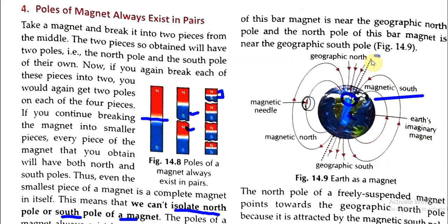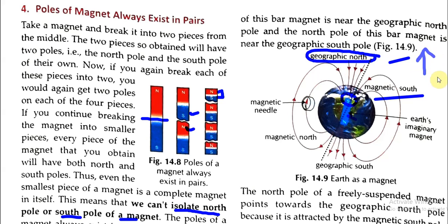The geographic north pole is actually where Earth's magnetic south pole is located. Geographically this is the North, and this is the South — according to geography. But magnetically, the poles are reversed.